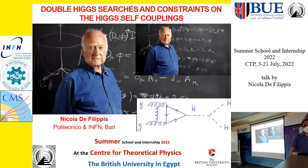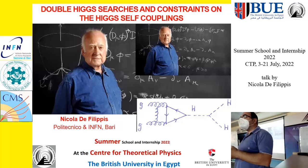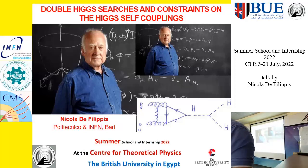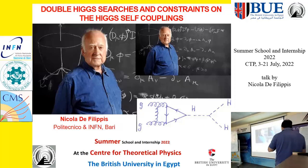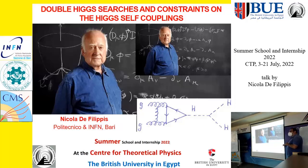What I want to mention now is the double Higgs searches and the constraints on the Higgs self-coupling. This topic is so important because in the Higgs potential there is a contribution coming from the Higgs coupling with itself — we are talking about the triple Higgs coupling or the quartic Higgs coupling.